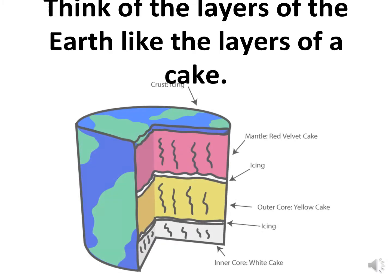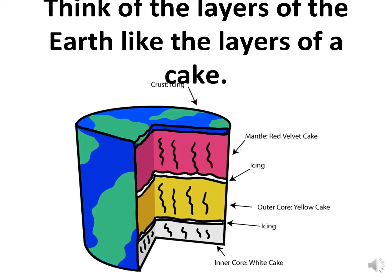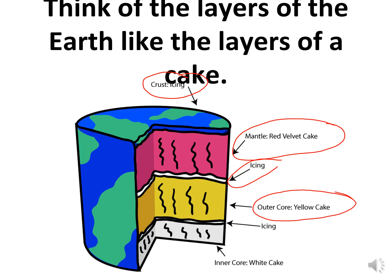Think of the layers of the earth like a cake. The icing is the crust. The mantle is the red velvet cake with a little icing in between. The outer core can be the yellow cake. And the icing and white cake at the bottom — that's the inner core.